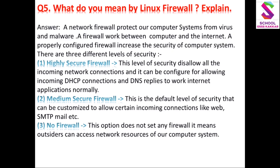The second level is the medium secure firewall. This is the default level of security in Linux. The firewall can be configured to highly secure or converted into no firewall. It can be customized to allow certain incoming connections, such as simple mails, etc.